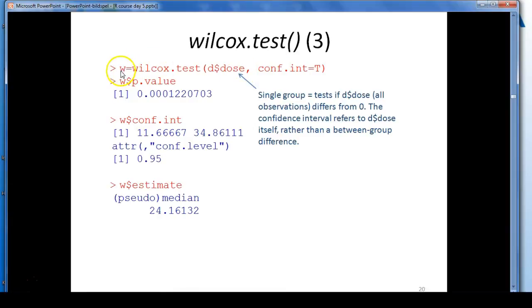Here we also store the results in W and ask for W dollar sign p.value, and we get a p-value which is rather low, as you can see. And this p-value refers to the null hypothesis that the median dose is equal to zero. That's the null hypothesis in this case. So you don't compare any groups, you just compare the median value to zero. And in this case, it's significantly different from zero. If you ask for the confidence interval, you get an interval ranging from 11.7 to 34.9. And the estimate is 24.16.